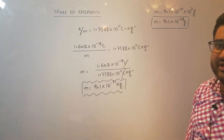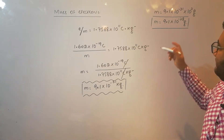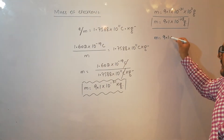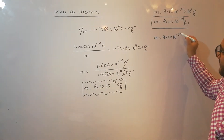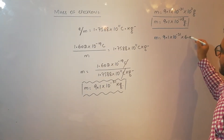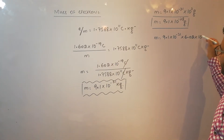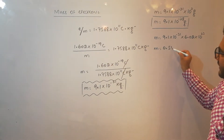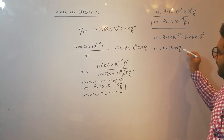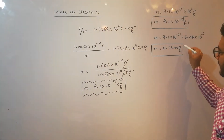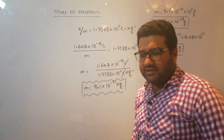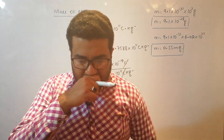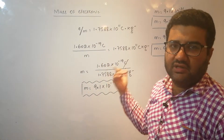That is the mass of electron in grams. Now, what is the mass of 1 mole of electron? The mass of 1 mole of electron is 9.1 × 10⁻³¹ multiplied by 6.02 × 10²³, and you will get 0.55 grams. If you want to see the detailed calculation, you can refer to my lecture about the concept of mole, where I have already discussed it in detail.